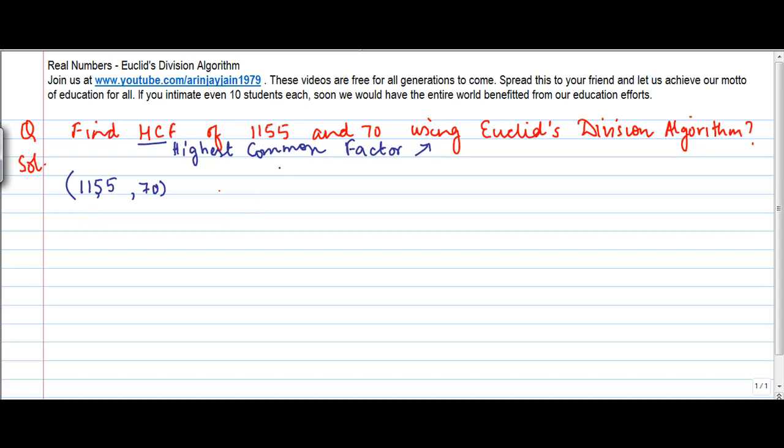Now if you remember, Euclid's Division Algorithm says that for any two given numbers a and b, a is equal to b times q plus r, where r is greater than or equal to 0 but less than b.